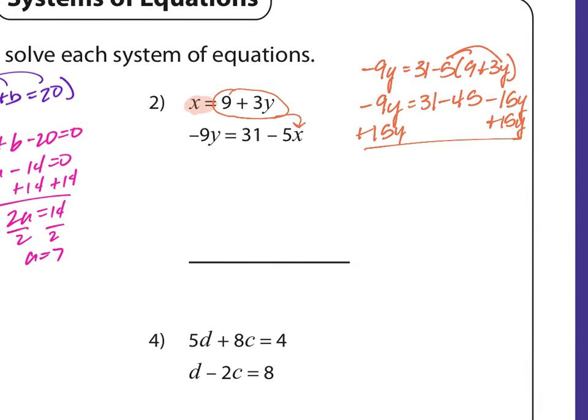And I get 6y equals... what does 6y equal? Negative 14 — this is going to be ugly. So 6y equals negative 14. Divide by 6, and y equals negative 7 thirds — unless I did something wrong, but I'm pretty sure that's right.